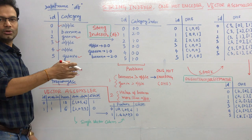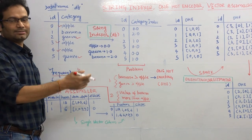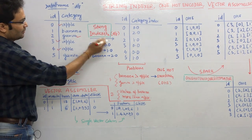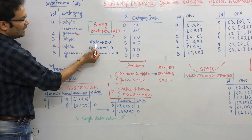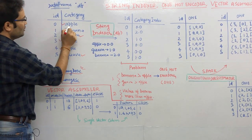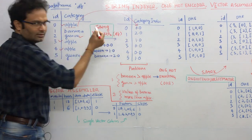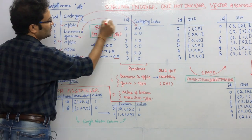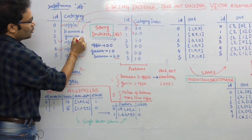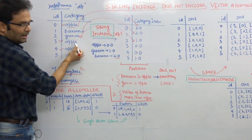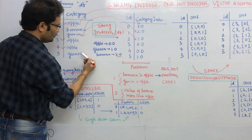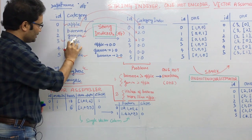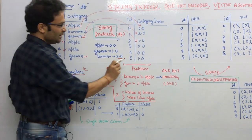I will show both examples in the code walkthrough. After applying StringIndexer, apple becomes zero, banana becomes two, and guava becomes one. So we have successfully transferred the categorical data into numeric format.